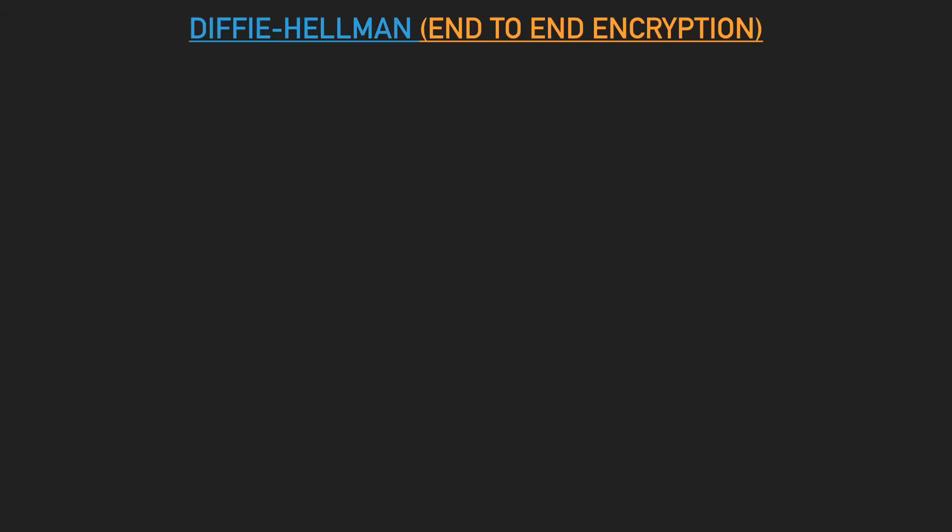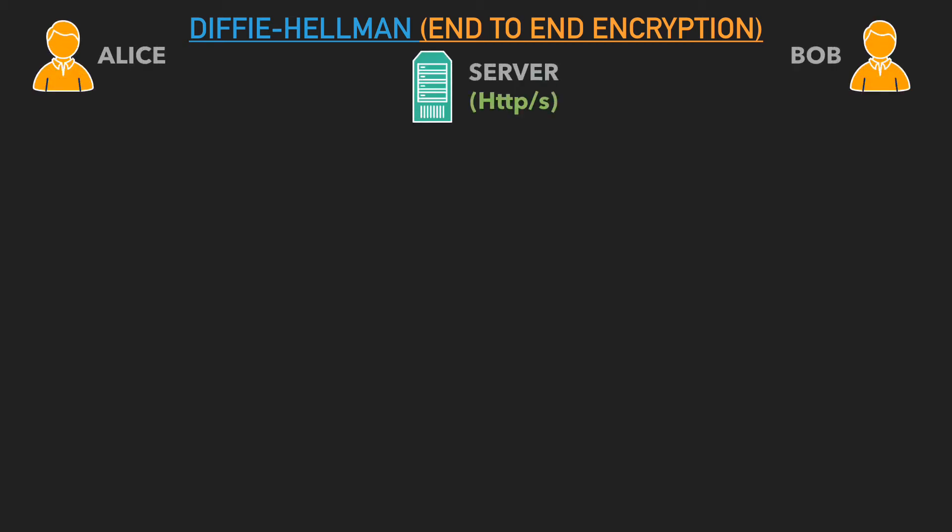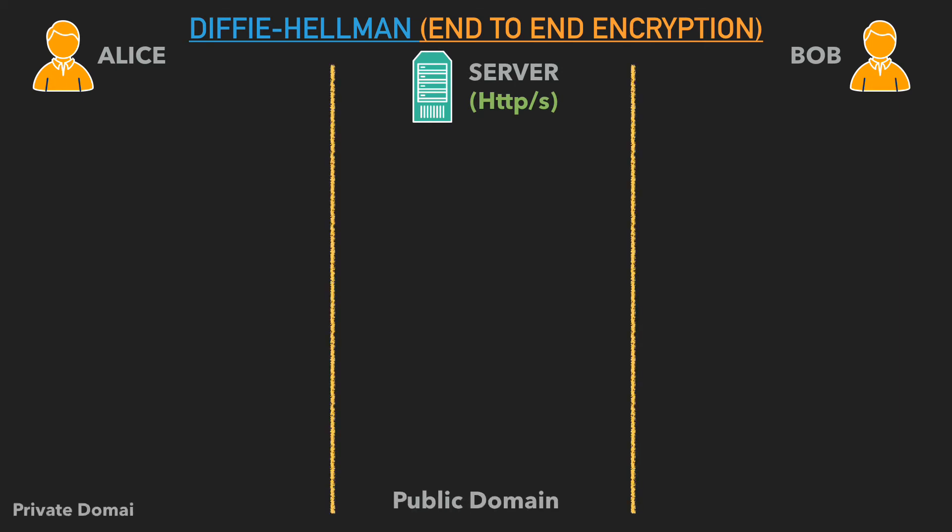Now let's look at the Diffie-Hellman solution. We won't cover the mathematical explanation here — that's in the next video — but rather the logic behind it. We have Alice, Bob, and the server, each with their respective domains: Alice's private domain, Bob's private domain, and the public domain. Whatever happens in the public domain is visible to everyone, while each private domain is confined solely to its owner.